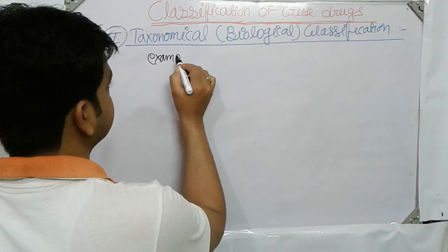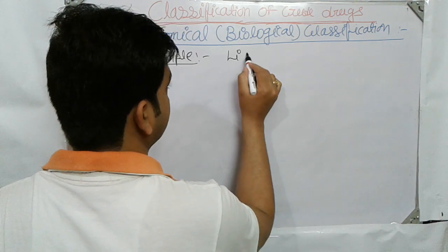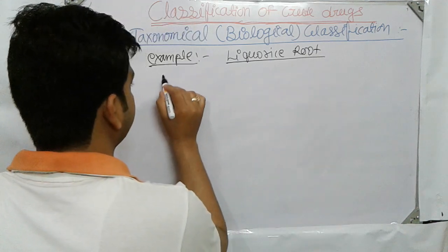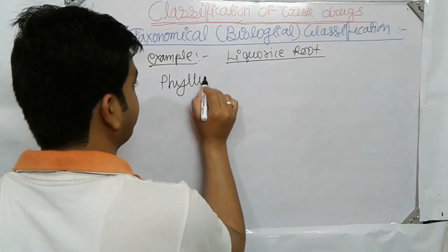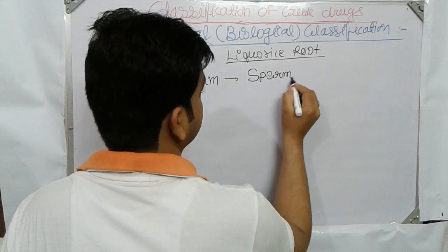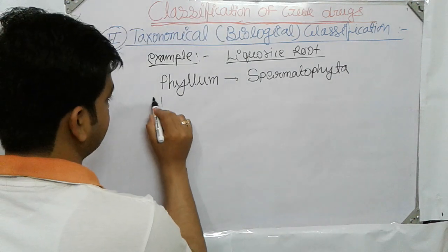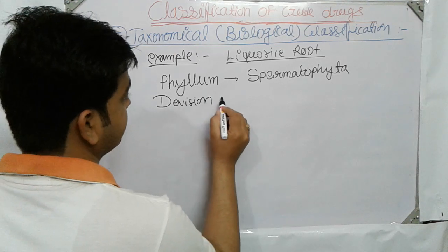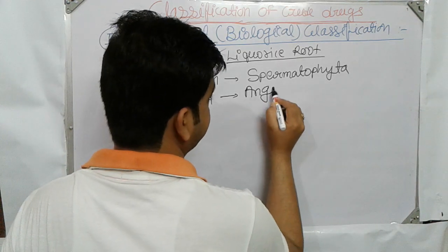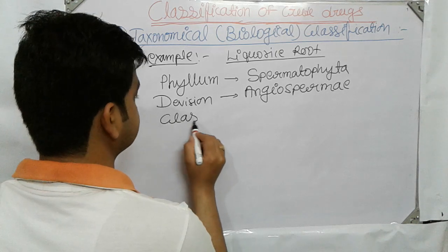Let us take the example of Liquorice root. Its taxonomical classification is: Phylum — Spermatophyta; Division — Angiosperm.